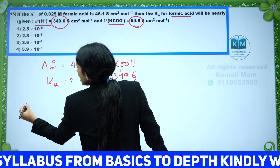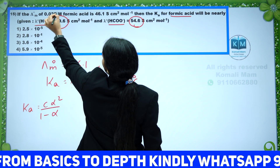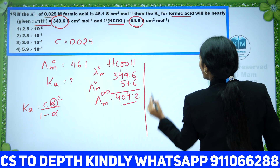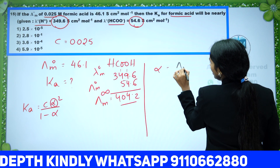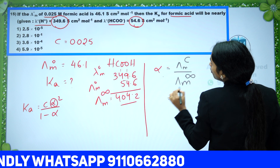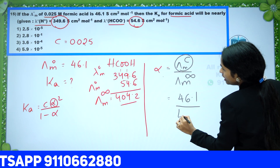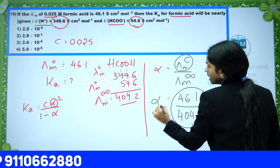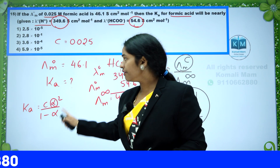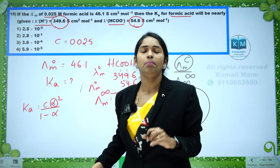They are asking us to find Ka. Ka = Cα² / (1 − α). C is already given as 0.025. To find alpha: alpha = molar conductivity at a particular concentration / molar conductivity at infinite dilution = 46.1 / 4.2 (from the given values). Solve for alpha, then substitute alpha and C into the Ka expression.